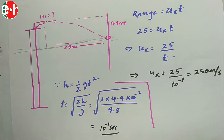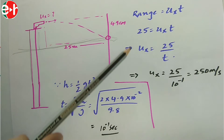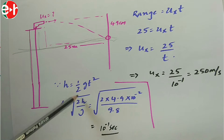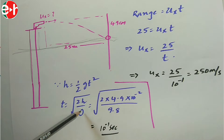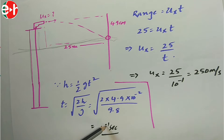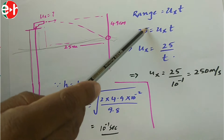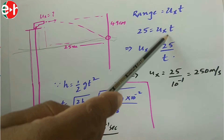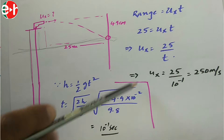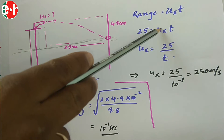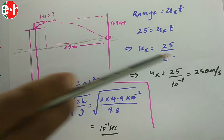Using range = Ux·t where t = √(2H/g), we calculate t = 10⁻¹ seconds. With range = 25 m, we can find Ux from 25 = Ux × 10⁻¹.